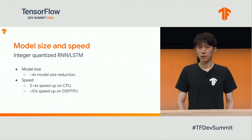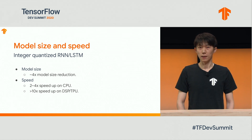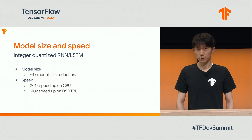As expected, there is a four-times model size reduction because static weights are quantized to 8 bits. Performance-wise, there is a two to four times speedup on CPU and more than 10 times speedup on DSP and TPU. These numbers are consistent with results from other operators.